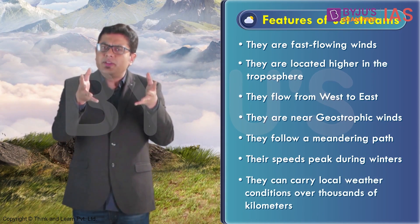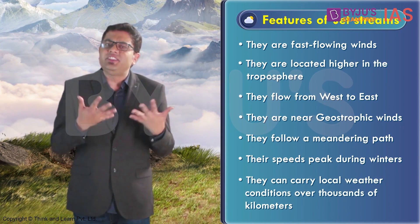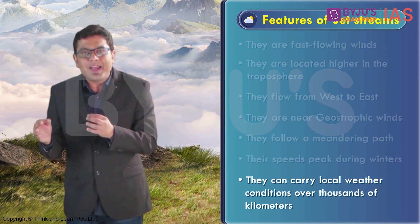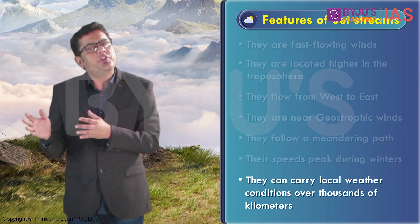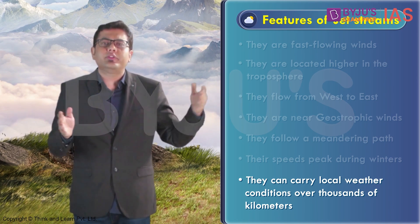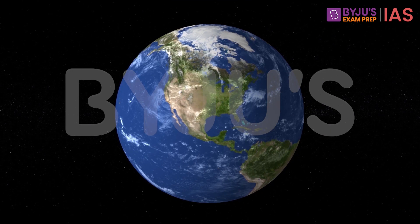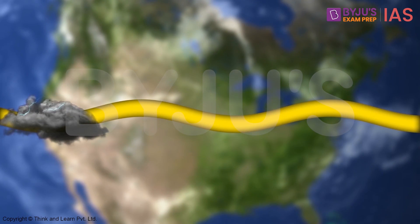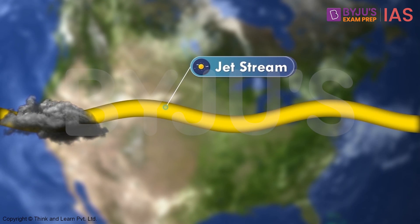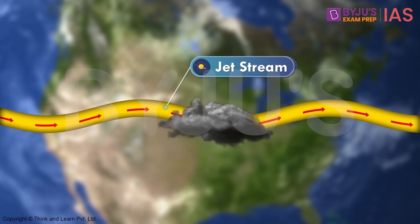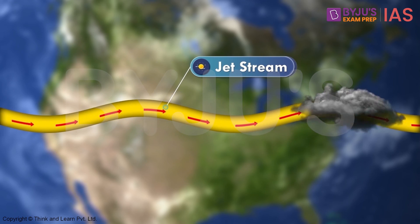Another interesting feature of jet streams is their ability to carry localized weather conditions over thousands of kilometers. For example, if a place is experiencing a cyclonic condition, the overlying jet stream has the ability to transport this atmospheric condition over a very large distance.